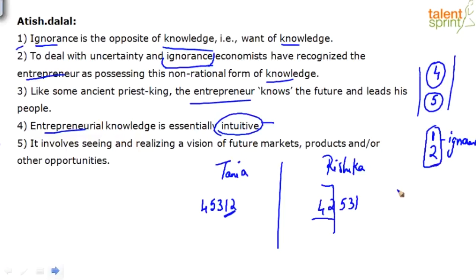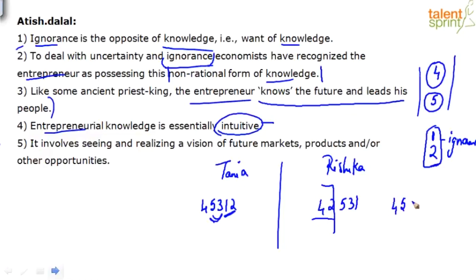Where does sentence three fit? Tanya has put it between the four-five link and the one-two link. Let's read: 'Entrepreneurial knowledge is essentially intuitive; it involves seeing and realizing a vision of future markets... like some ancient priest-king, the entrepreneur knows the future and leads his people.' Could it also come after two? 'To deal with uncertainty and ignorance, economists have recognized the entrepreneur as possessing this non-rational form of knowledge.'